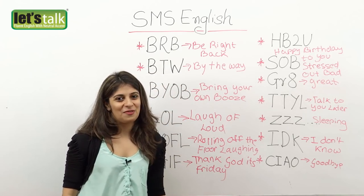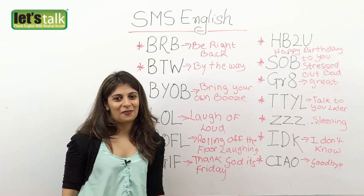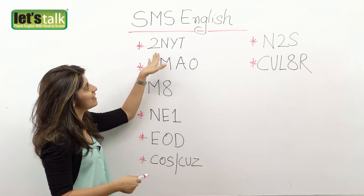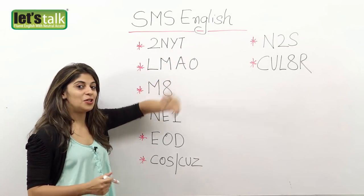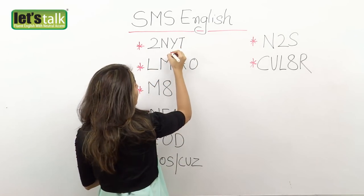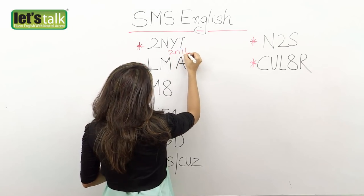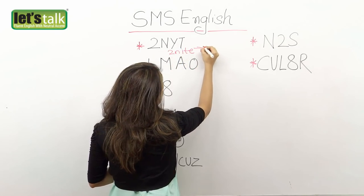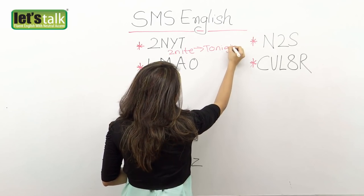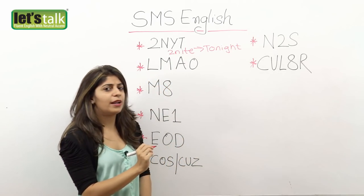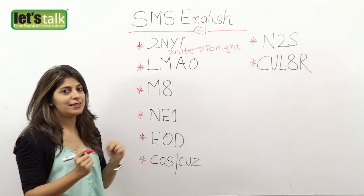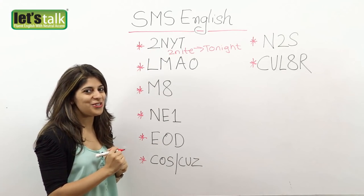Now let's have a look at some more abbreviations and acronyms. The next one is 2NYT which means 'tonight.' Many people also write it in different ways, but it means tonight. So someone texting you that 'tonight I am going to see you' can use this abbreviation.